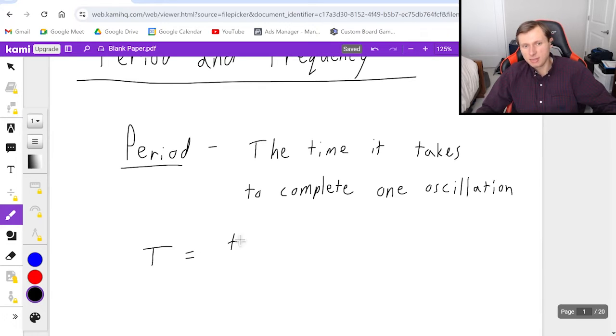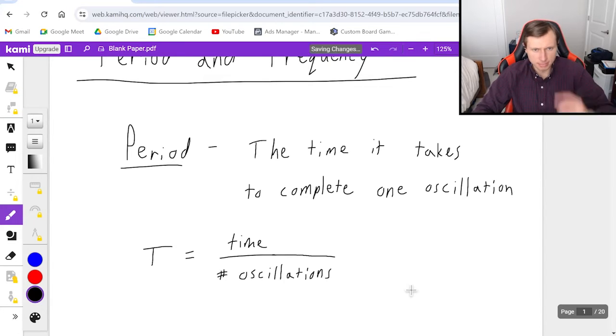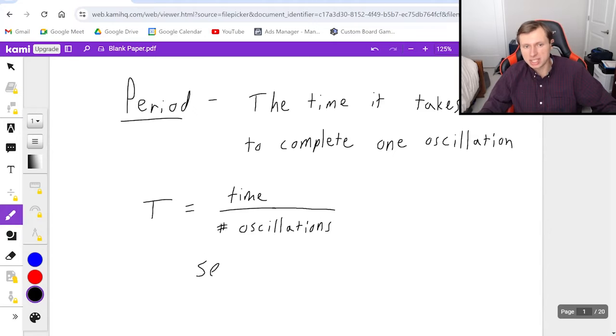And the equation is time divided by number of oscillations. Remember that the word oscillations can be replaced with cycles or rotations or anything that means something similar. And the units for period are going to be seconds. I guess technically it can be minutes or hours too, but usually it's seconds in physics class.